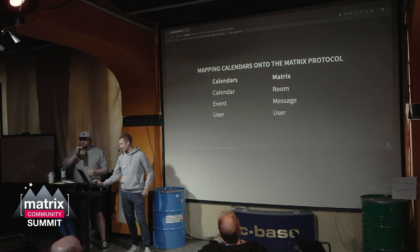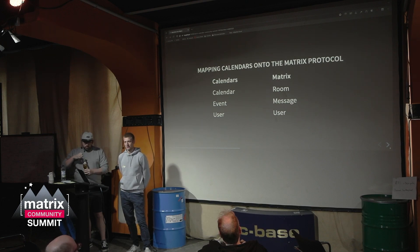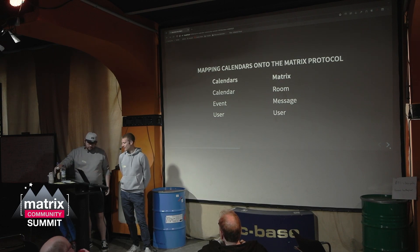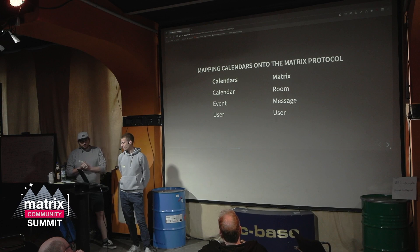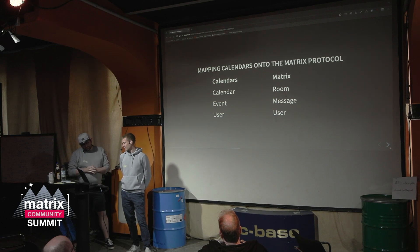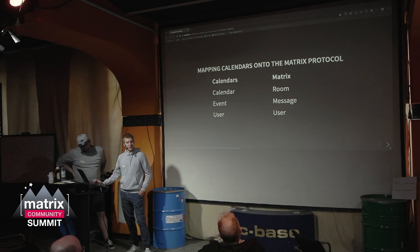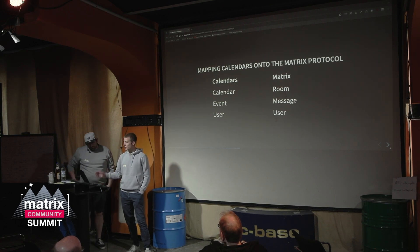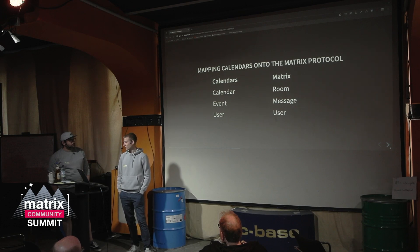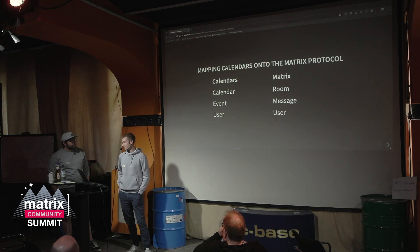The mappings are pretty easy. We can use the users from Matrix, and the calendar event maps pretty well to a message. It was like a perfect solution for our problem. The only thing is that we don't want to integrate calendars into the chat application, so we need maybe another room type to differentiate between calendar rooms and message rooms.